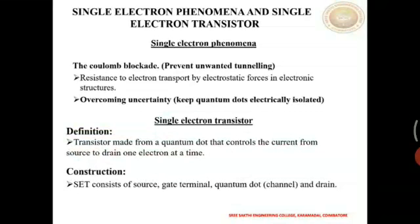Rather than moving many electrons to a transistor, it is better to move one electron to increase its efficiency. This concept led to the invention of the single electron transistor and single electron phenomena. A single electron transistor is made from a quantum dot that controls the current from source to drain one electron at a time.